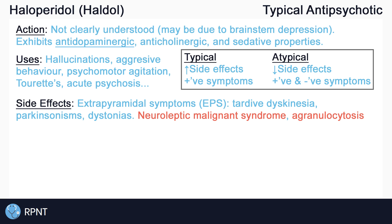Antipsychotics like haloperidol may also cause a life-threatening reaction called neuroleptic malignant syndrome, or NMS. NMS presents as high fever, confusion, tachycardia, and muscle rigidity, and can lead to further complications like rhabdomyolysis, kidney failure, and seizures. Another major side effect is agranulocytosis, which is a lowered white blood cell count, leading to a high risk of infection due to a suppressed immune system.